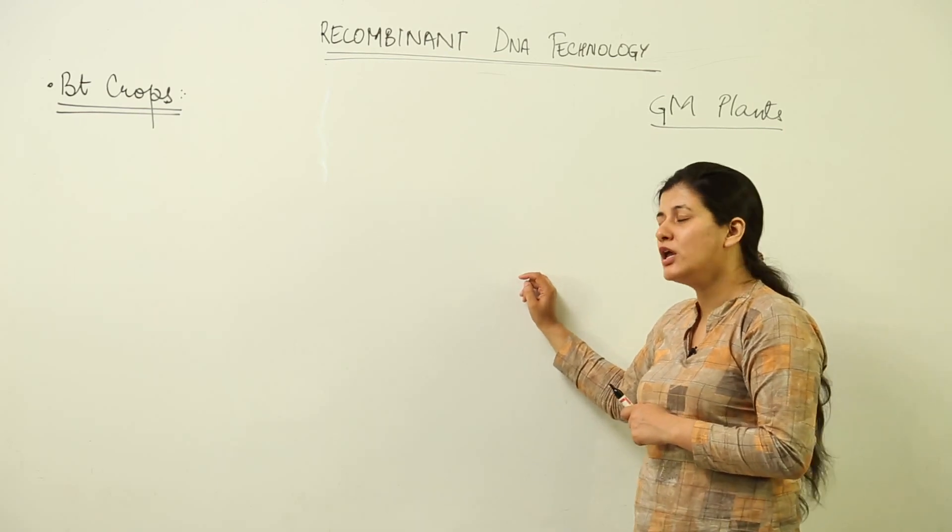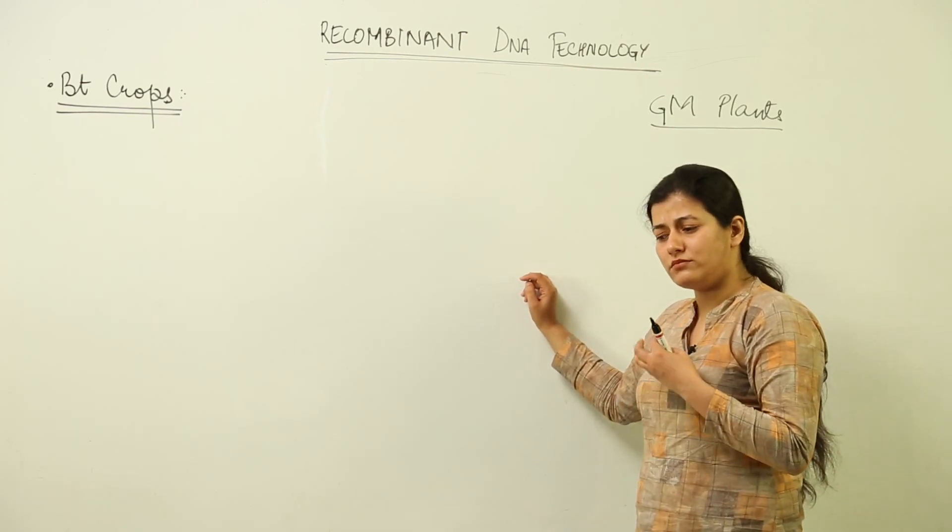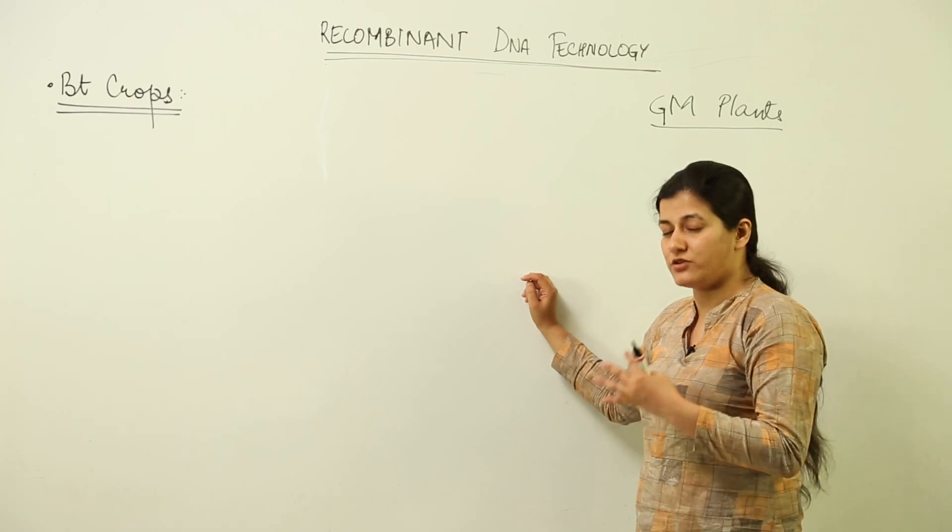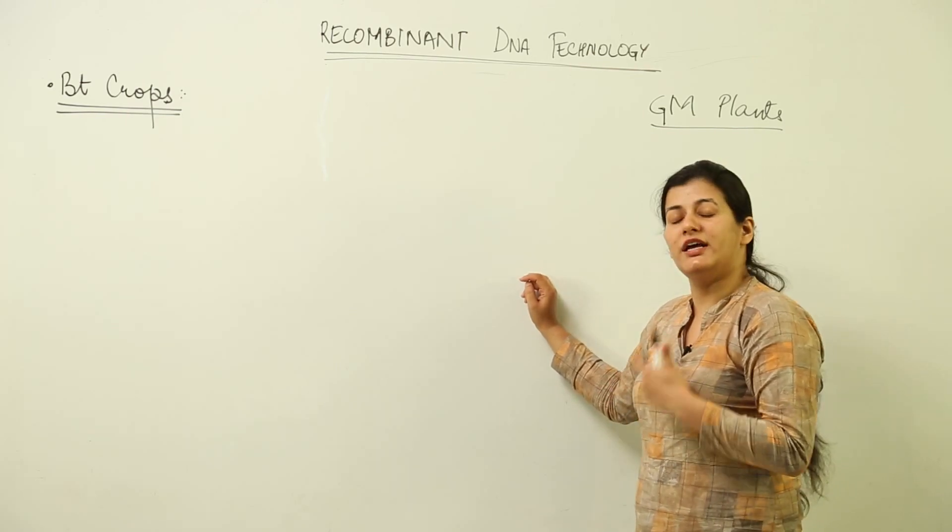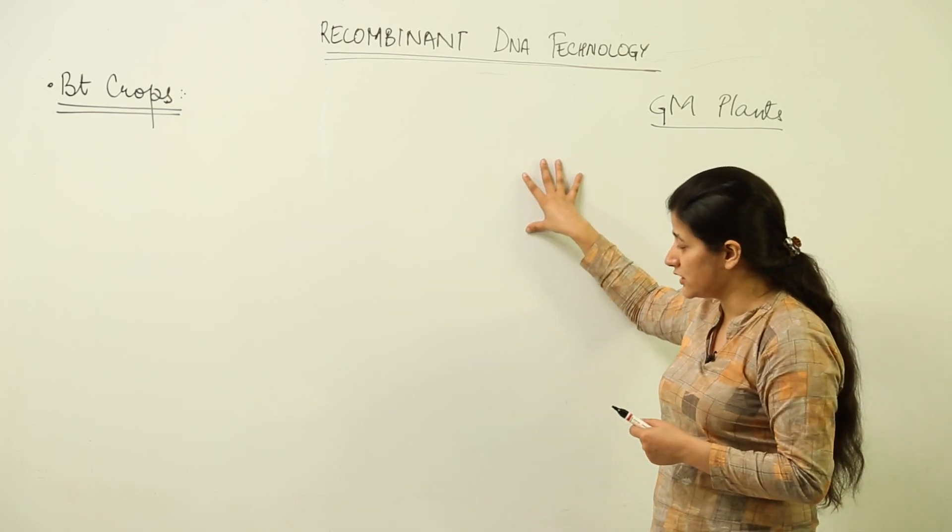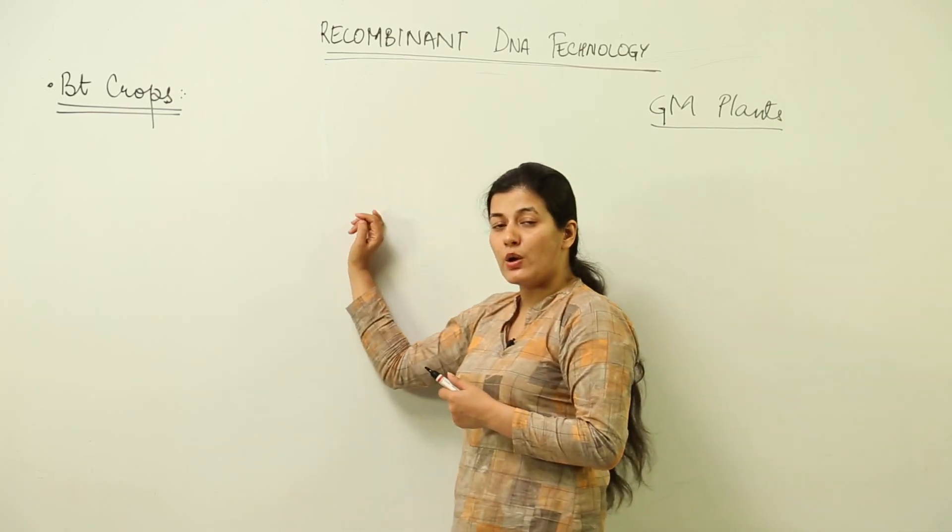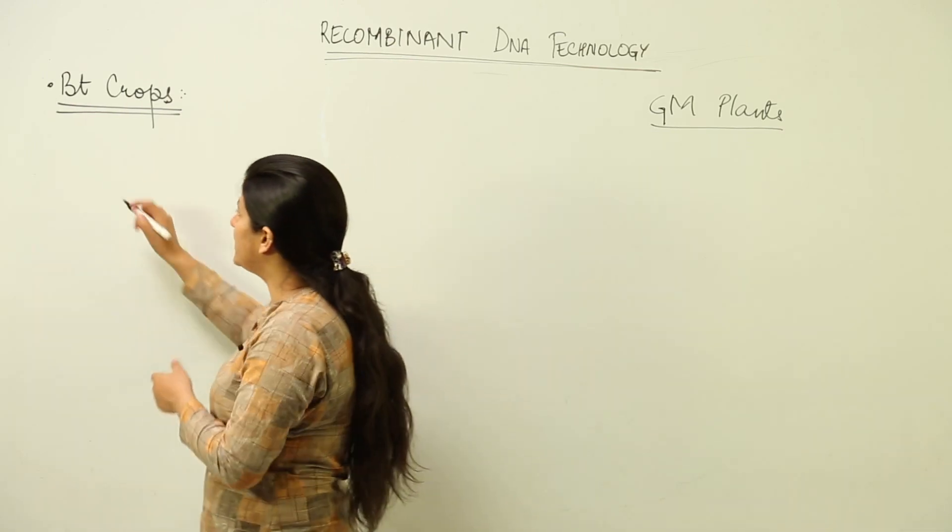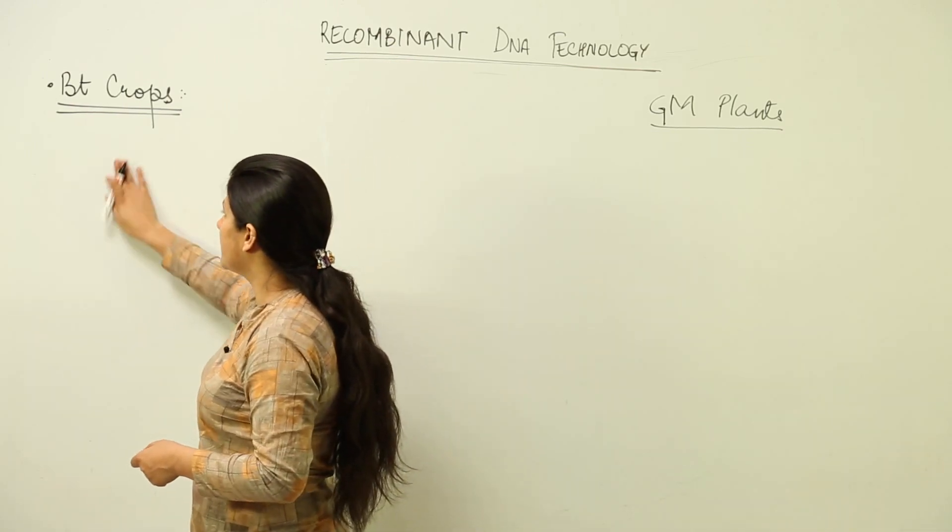We have examples of certain crops where yield was increased. We have examples of certain crops where abiotic stresses could be well met. We have a certain category of crops where we deal with pests.